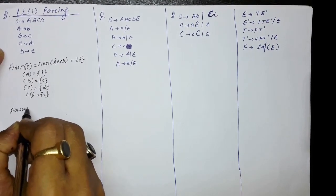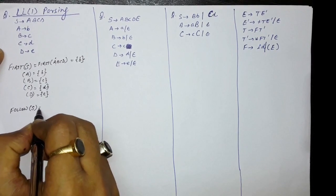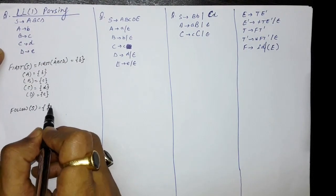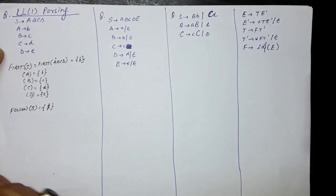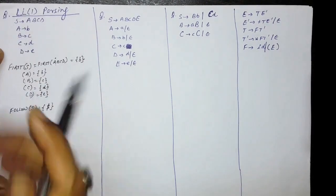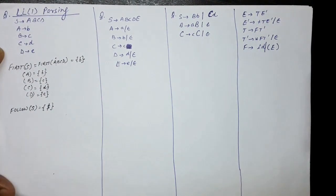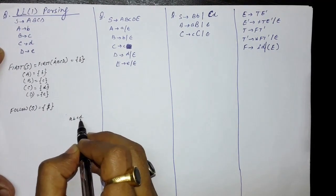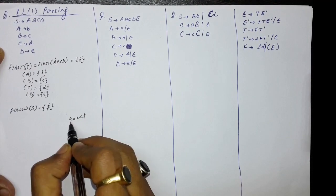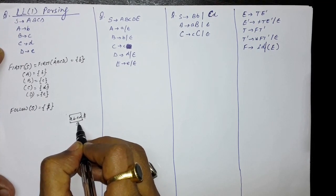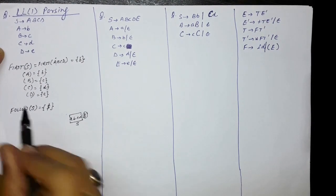Now let us find out the FOLLOW. FOLLOW of capital S will certainly contain a dollar because this is the start symbol. S does not appear elsewhere on the right hand side, so FOLLOW of S will only contain a dollar. The reason is that when deriving a string, there will be a dollar after the entire string is converted to the start symbol.